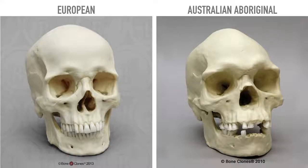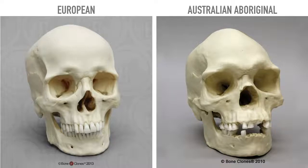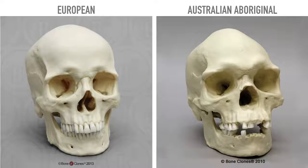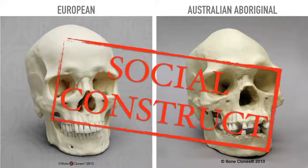Here's a European skull and an Australian Aboriginal skull. The Australian Aboriginal has a completely different shaped crown on the head, different shaped eye sockets, different shaped nose area, a slightly wider or more prominent jaw, and slightly more prominent cheekbones.